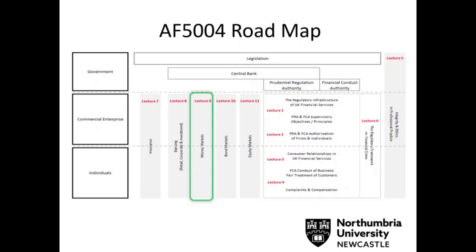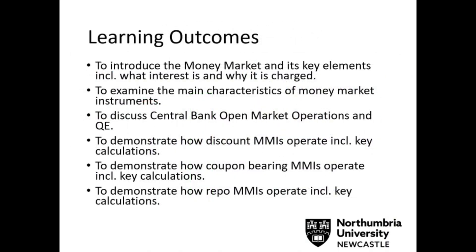This can be between the ultimate borrowers and the ultimate suppliers, but this could also be between the financial markets and the intermediaries from that diagram last week. In this lecture we're going to cover a brief introduction of what the money markets are, the main characteristics of the instruments that are traded, then discuss central bank operations in relation to quantitative easing using these markets. In part two we'll go through the calculations of how we work out the returns and yields on money market products — starting with discounted products, then coupon-bearing products, and finishing with repurchase agreement calculations.